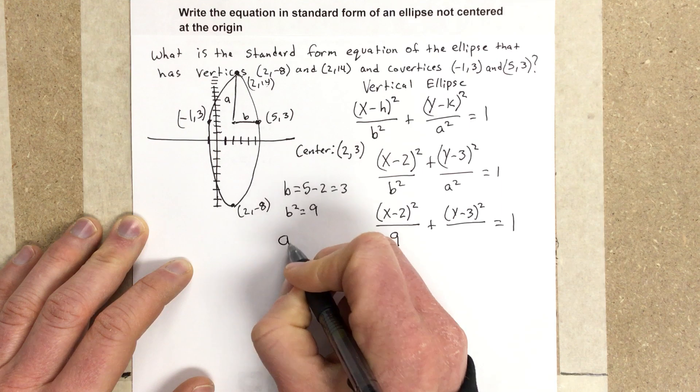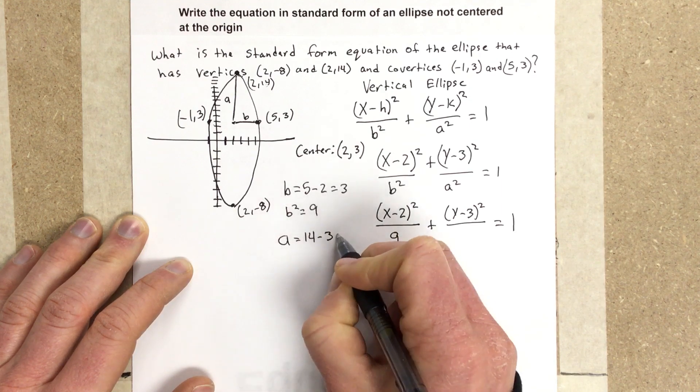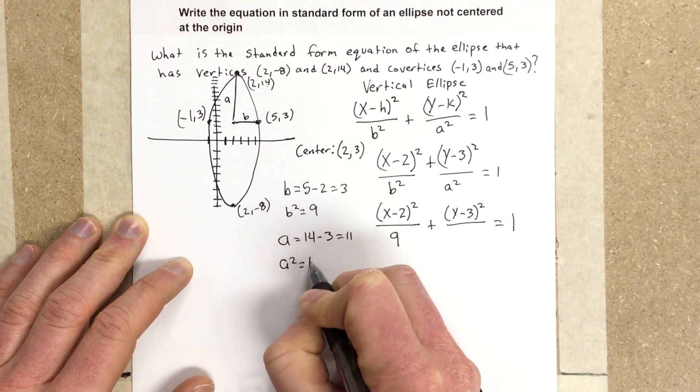So I'm going to say that a is equal to 14 minus 3, which is 11. So a² is equal to 121.